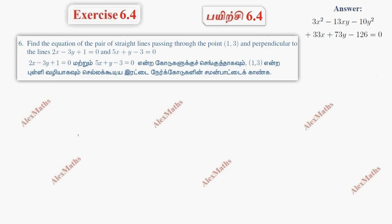Hi students, this is Exercise 6.4, question number 6. Find the equation of the pair of straight lines passing through the point and perpendicular to the given two lines.